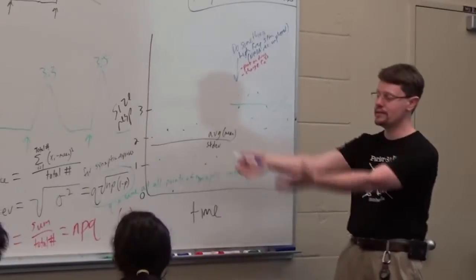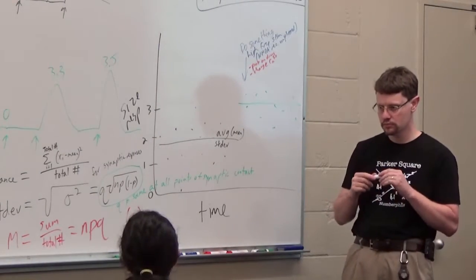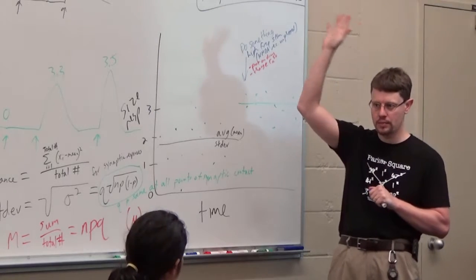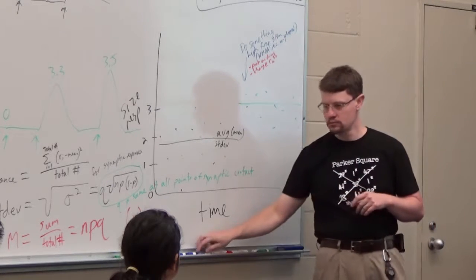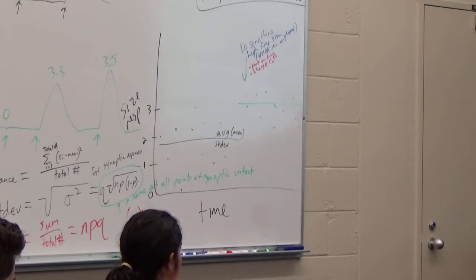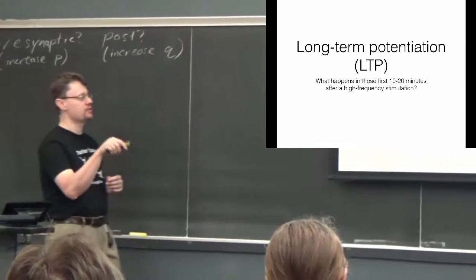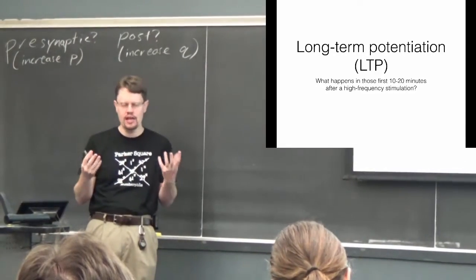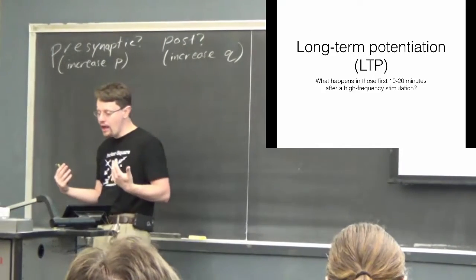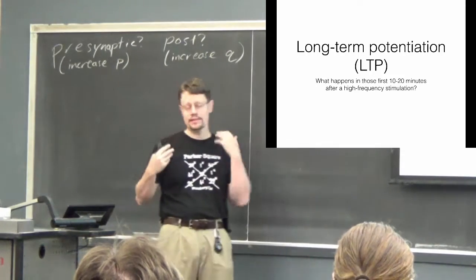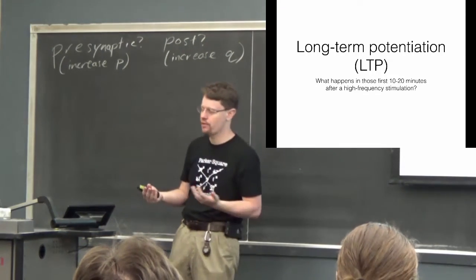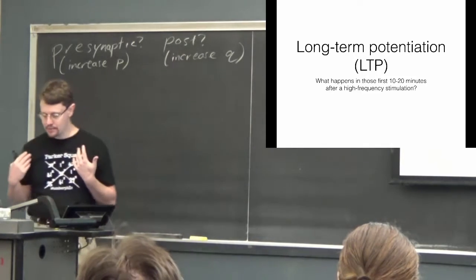So if our LTP changes postsynaptic sensitivity, our expectation is that the 1/CV² value will not change. But if it changes presynaptic release, then our expectation is that the value will change. That's the whole reason why we have all of this. So coming back to the main question: what's happening in those first 10 to 20 minutes after high-frequency stimulation — and more broadly, what's happening in my brain in those first 10 to 20 minutes as I learn a new piece of information, learn somebody's name, learn how to find my way around a new environment?